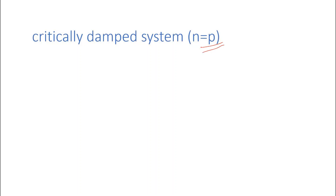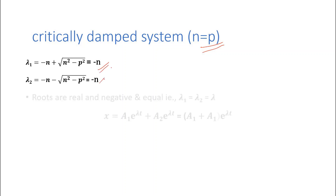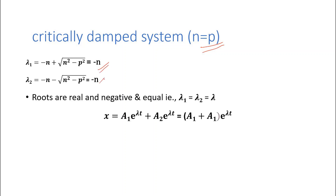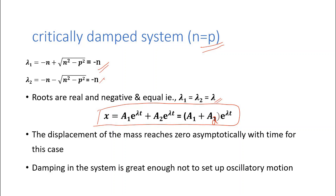Critical damping is the condition when n equals p. In this case, λ₁ and λ₂ are both equal to −n — real, negative, and equal roots. The solution becomes x = (A₁ + A₂)·e^(λt). In this system the displacement of mass reaches zero asymptotically with time, and there is no oscillatory motion. This is the critical damping condition.